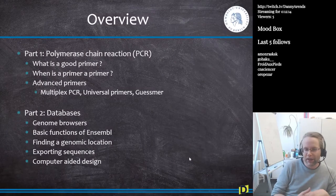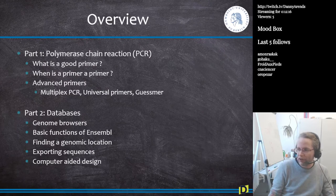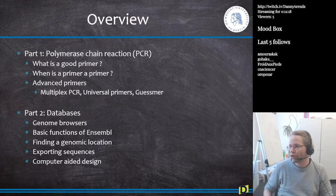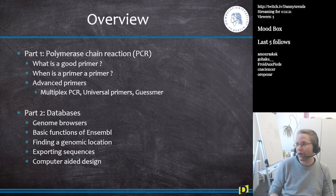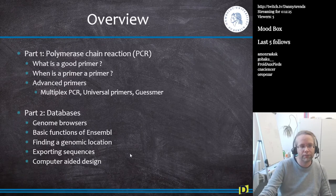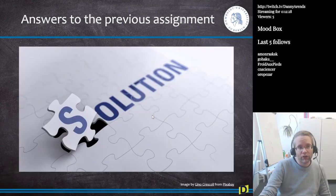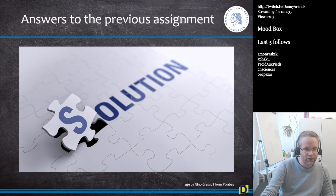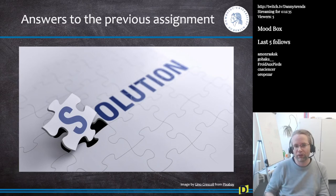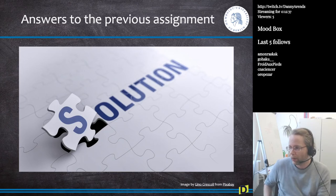Then we'll cover how to find a genomic location, export your sequence, and use a computer to do primer design — because of course you can design primers by hand, but it's much better to have a computer do it for you. But first, like always, we will have the answers to the previous assignments from lecture number eight, the phenotypes and QTL mapping lecture.